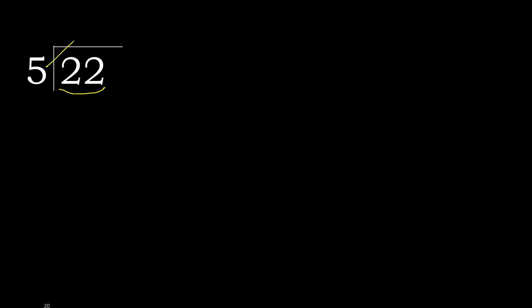22 divided by 5. 2 is less, therefore next. 22 is not less, therefore with 22: 5 multiplied by which number is nearest to 22 but not greater? 5 multiplied by 5 is greater. 5 multiplied by 4 is 20, which is not greater. 22 minus 20 is 2.